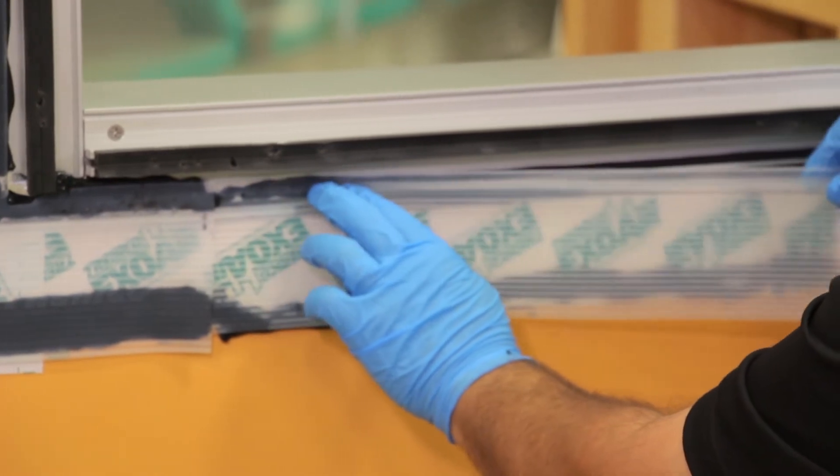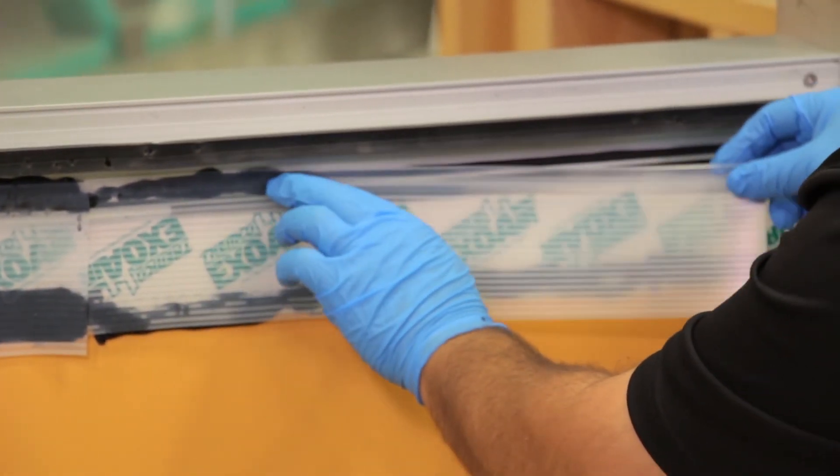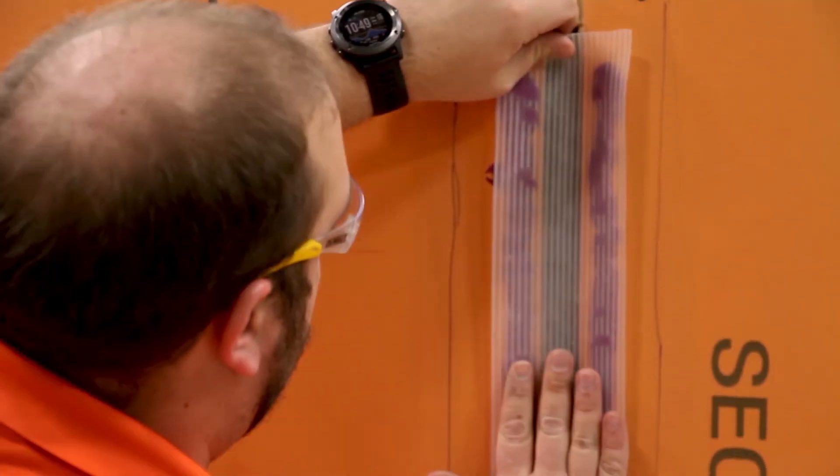It also has ribs in the profile itself, which will prevent too much squeeze out of the sealant, so you're ensuring a good bond with the substrate.